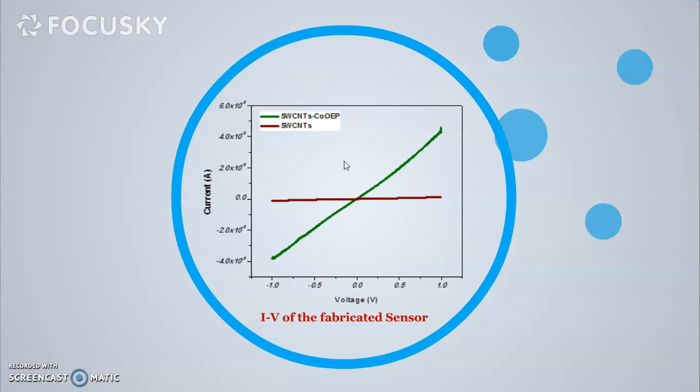After the structural characterization, electrical characterization was done with CHI-660 electrochemical workstation. Here you can see current voltage characteristics before and after functionalization. Basically from these characteristics, we can say that there is a formation of charge transfer complex.